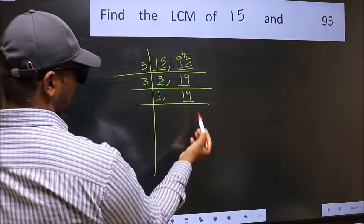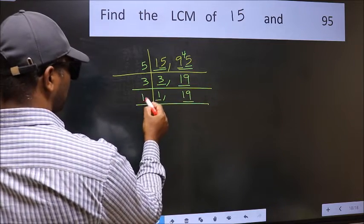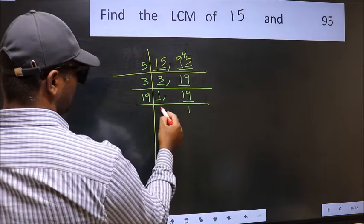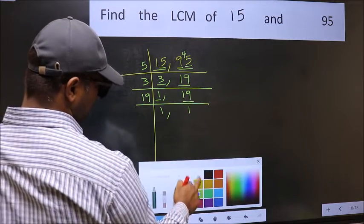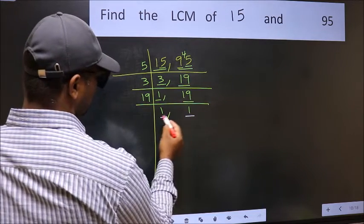Focus on the next number, 19. 19 is a prime number, so 19 once 19. We got 1 in both places.